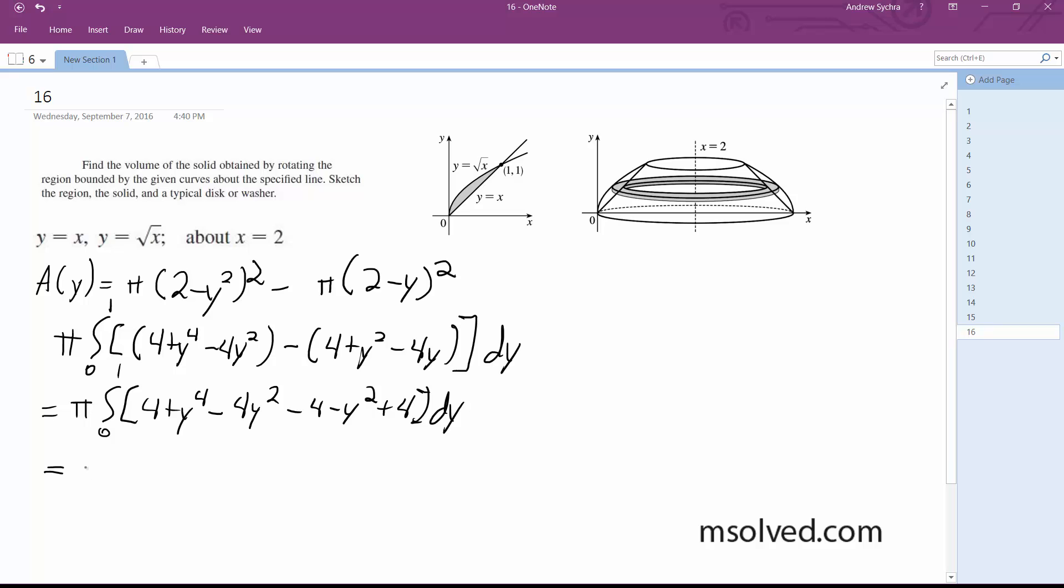So this becomes equal to pi, and after it's integrated, y to the 5th over 5 minus 5y to the 3rd over 3 plus 2y to the 2nd, 0 to 1. We get pi times 1 5th minus 5 3rds plus 2. And finally, this sums up to be equal to 8 pi over 15. That's it.